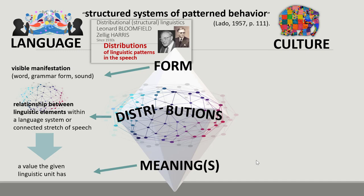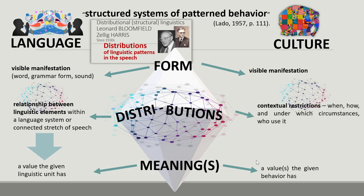Similarly, when analyzing culture, form means the visible manifestation of a cultural product or behavior. Meaning is a value or set of values the given cultural behavior or product has. Distribution refers to different contextual restrictions — when, how, and under which circumstances the given cultural behavior or product occurs in real-life situations and who uses it. The analysis of distributions refines and deepens our understanding of meanings, especially related to the invisible part of the cultural iceberg: values, perspectives, and attitudes. Together, the three dimensions — form, meanings, and distributions — allow exploration of a cultural phenomenon from both surface and deep cultural perspectives.